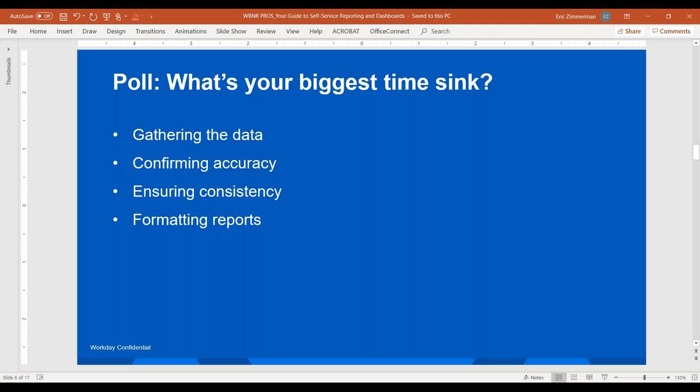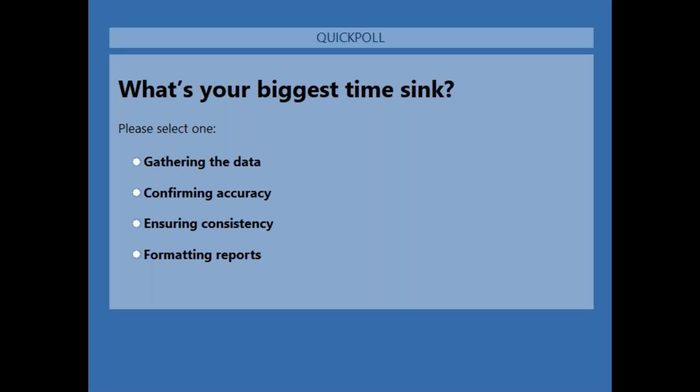I want to push out our first poll to understand where you're spending the biggest amount of time right now. What is your biggest time sink — whether it's gathering data, confirming accuracy, ensuring consistency — my favorite one, where you're always fighting with sales or marketing about whose numbers are right — or is it formatting your reports? Corey, how would you answer this? Before Adaptive, what was your biggest time sink?